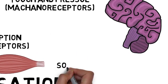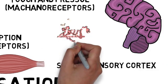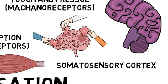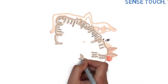The brain processes somatic sensory information in the somatosensory cortex, located in the parietal lobe. This area of the brain is organized like a map of the body, with different regions dedicated to processing sensations from different parts of the body.